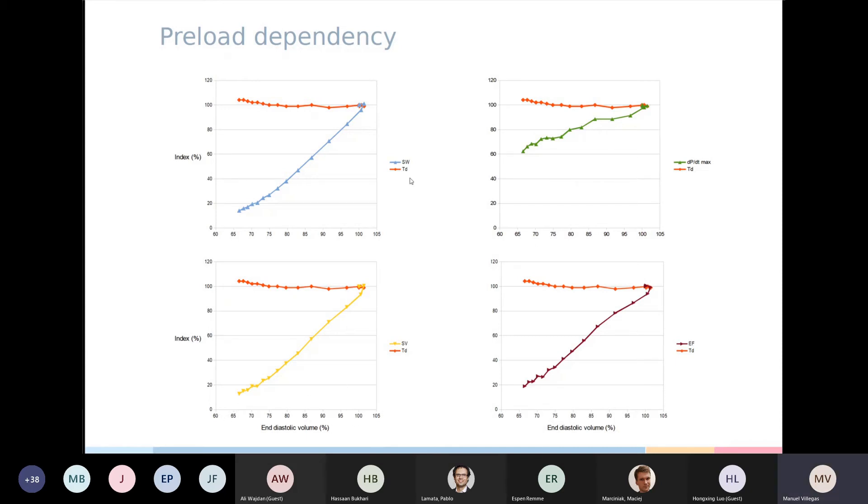On the other hand, stroke work, stroke volume, ejection fraction, and dP/dt max have a clear variation if we decrease the diastolic volume. This shows that TD is quite preload independent and allows us to use it without worrying about this.